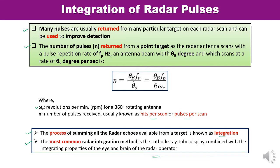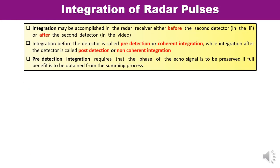Integration can be performed in two ways: either before the detector — which is the second detector used in the receiver stage — or after the second detector. Before the second detector means in the IF amplifier stage; after means in the video stage. When integration is done before the detector it is known as pre-detection or coherent integration. When performed after the detector it is known as post-detection or non-coherent integration. Pre-detection integration requires that the phase of the echo signal be preserved in order to utilize the full benefit of the integration process.